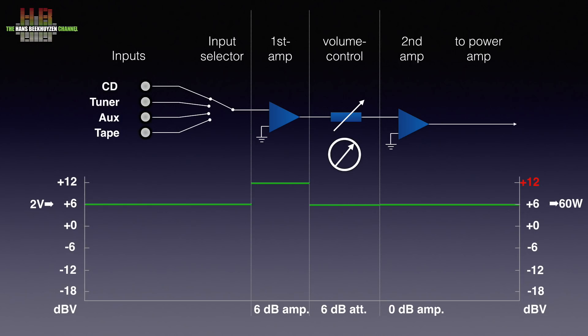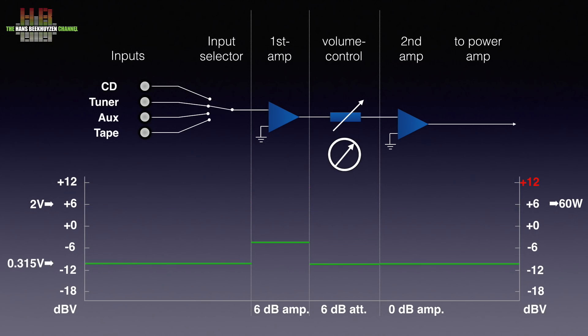Let's now look what happens when we connect an old Quad FM3. This tuner outputs only 100 millivolts nominal, which is minus 20 dBV. We again add 10 dB headroom and thus set the highest level at minus 10 dBV.